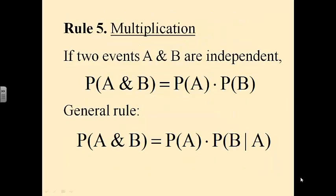Rule number five: multiplication. If two events A and B are independent — meaning the outcome of one is not determined by the outcome of the other — then the probability of A and B is simply the probability of A times the probability of B. There's also a general rule: the probability of A and B equals the probability of A times the probability of B given A. You have to figure out when to use which one.